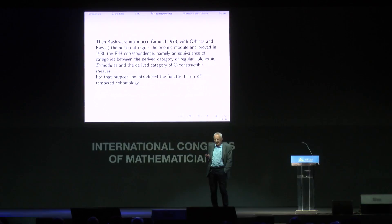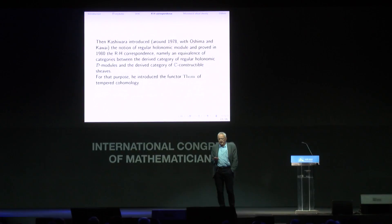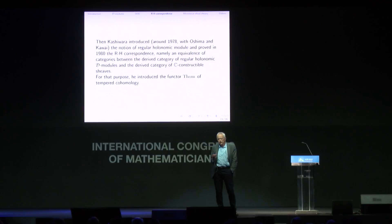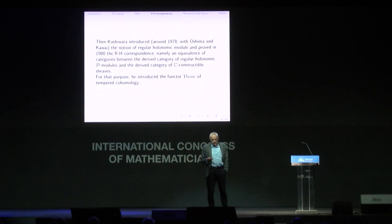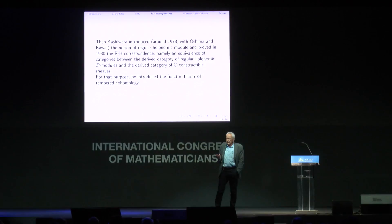Kashiwara introduced in 1978, with Oshima and Kawai, the notion of regular holonomic modules, and in 1980 proved the Riemann-Hilbert correspondence: an equivalence of categories between the derived category of regular holonomic D-modules and the derived category of constructible sheaves. If you restrict to the subcategory of modules in degree zero, which is abelian, you find an abelian subcategory of constructible sheaves — the category of perverse sheaves. For this purpose, Kashiwara introduced the important functor of temperate cohomology.